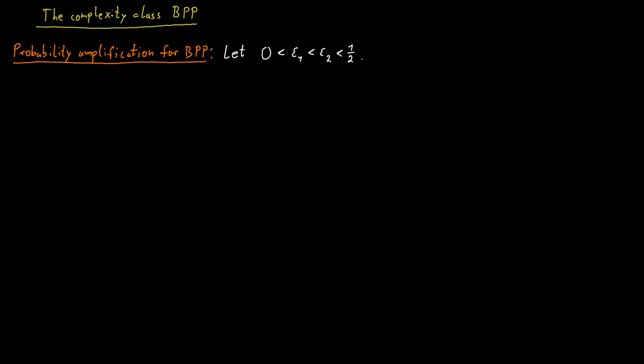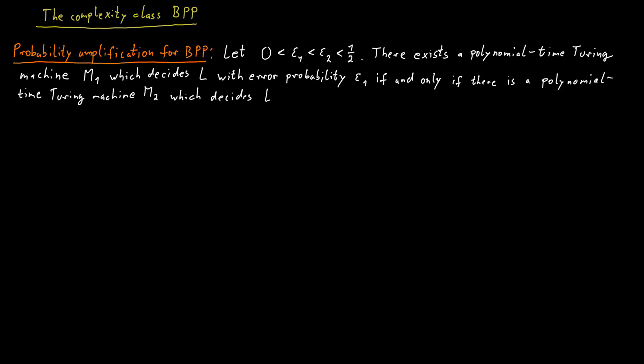And let's say epsilon 1 is strictly smaller than epsilon 2. Then our claim is that there exists a polynomial time Turing machine M1 which decides a language L with error probability epsilon 1, if and only if there is a polynomial time Turing machine M2 which decides the language with an error probability of at most epsilon 2.